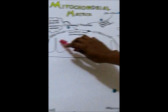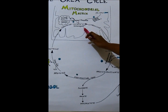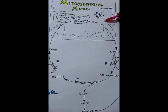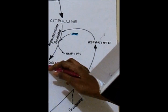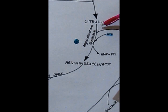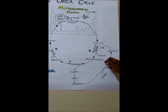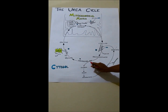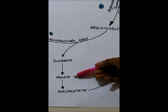N-acetylglutamate is an allosteric activator for carbamoyl phosphate synthetase 1. Carbamoyl phosphate is added to ornithine in the mitochondrial matrix, forming citrulline. This process is facilitated by the enzyme ornithine transcarbamoylase. When citrulline is formed in the mitochondrial matrix, it moves into the cytosol and forms argininosuccinate. This reaction is catalyzed by argininosuccinate synthetase, which is called a synthetase because it uses an ATP molecule.